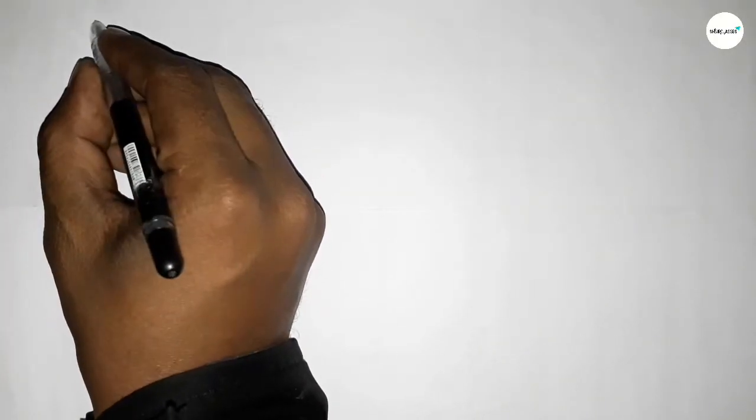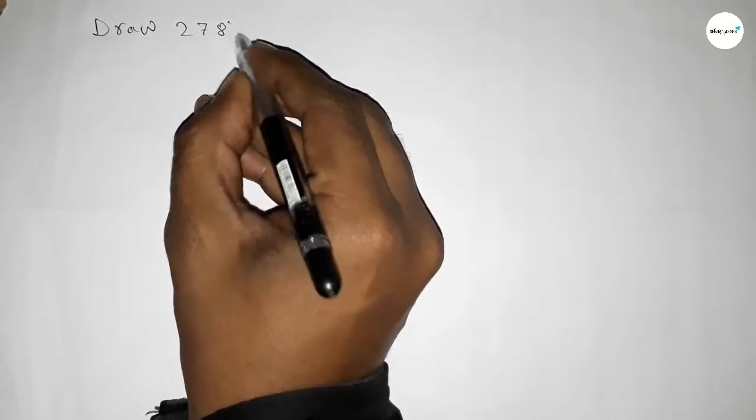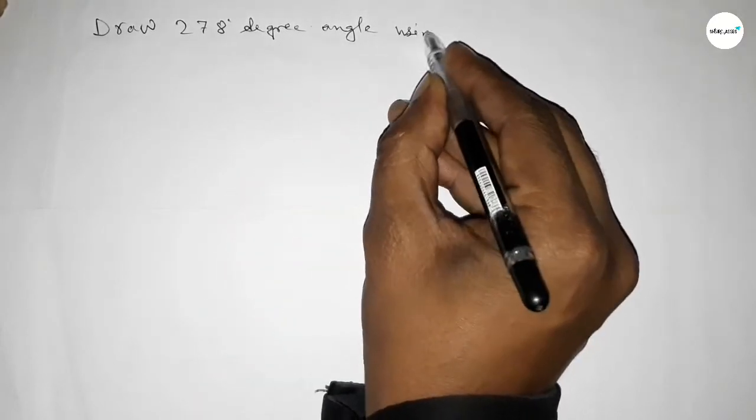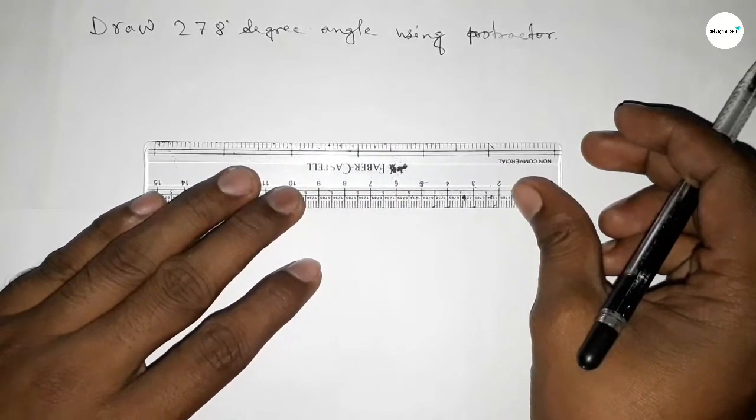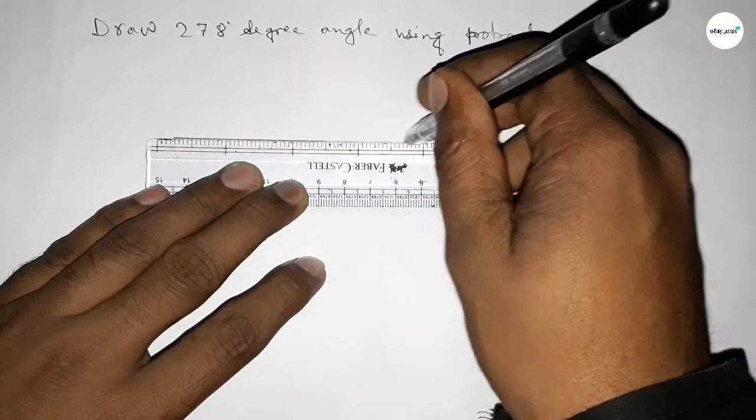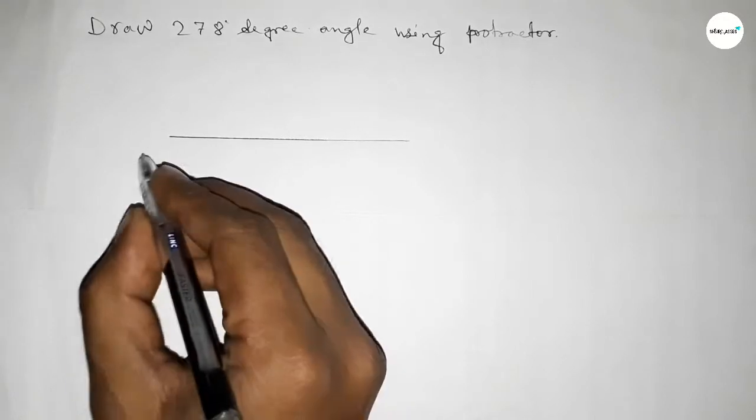Hi everyone, welcome to SSR Classes. Today in this video we have to draw a 278 degree angle by using protractor. So let's start the video. First of all, drawing here a straight line of any length, next taking here